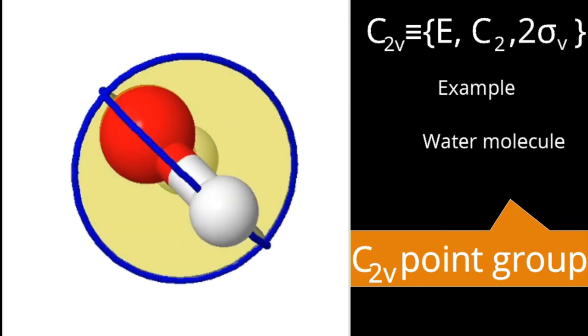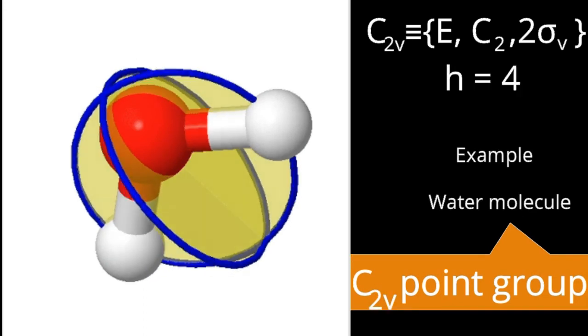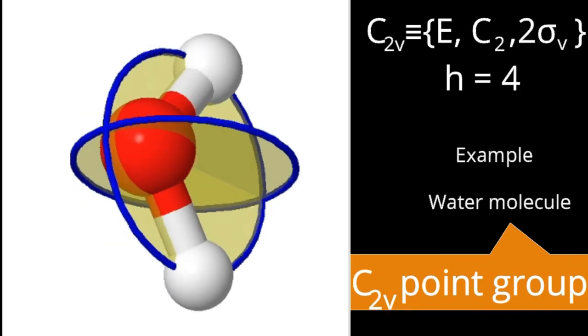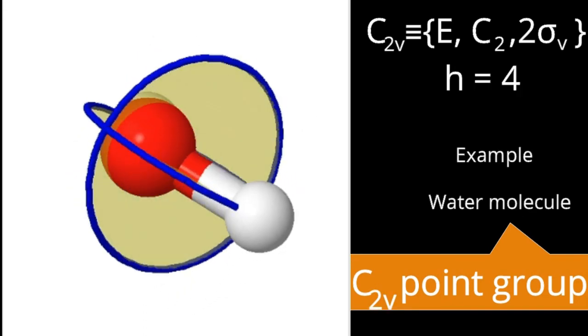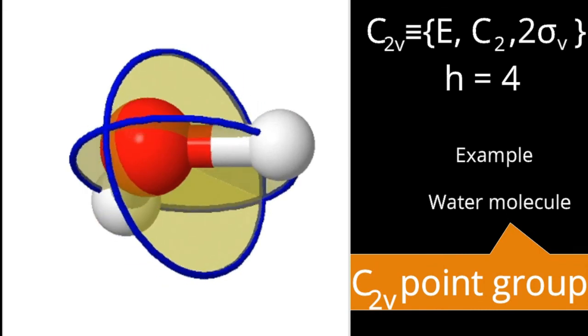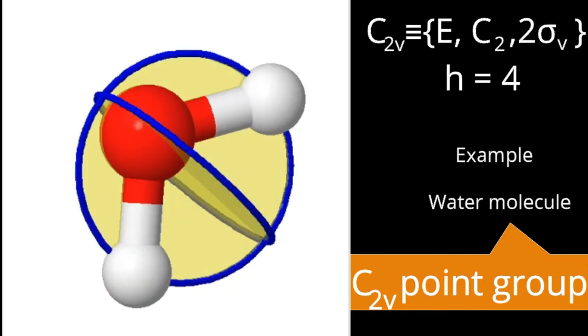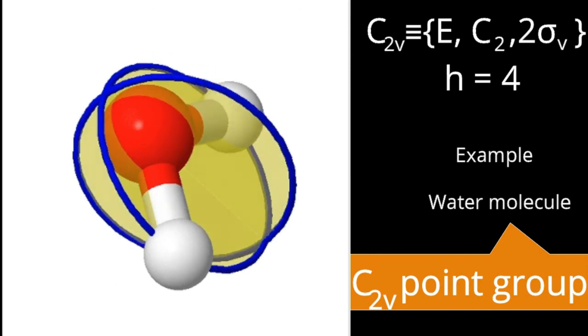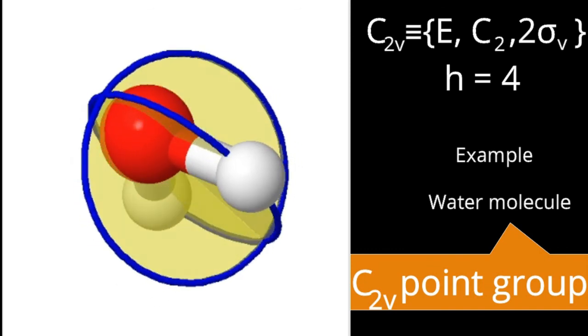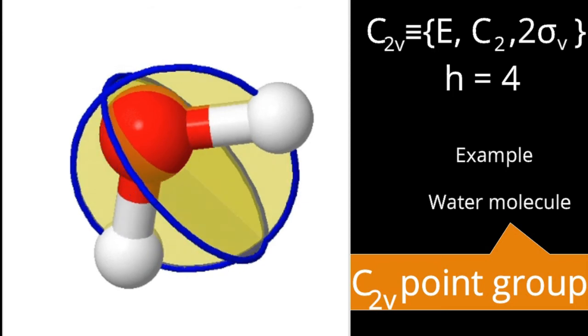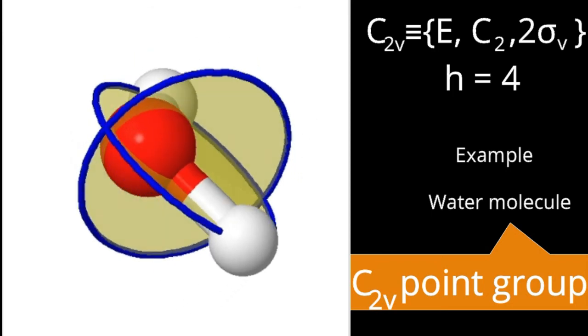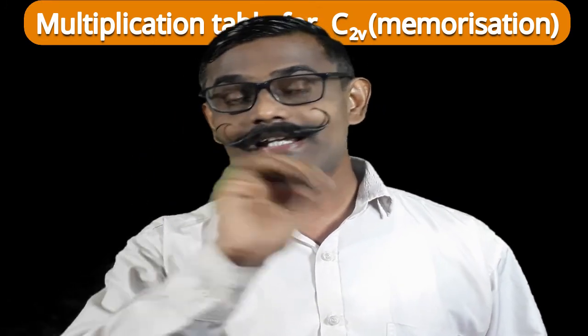The order of a point group is the total number of operations possible for that point group. There are 4 total operations, so the order H is equal to 4 for the C2V point group. In group theory, to study the group multiplication table is very important because four essential conditions must be satisfied for a group.